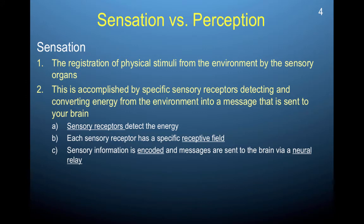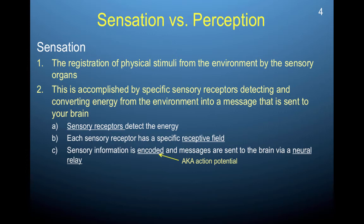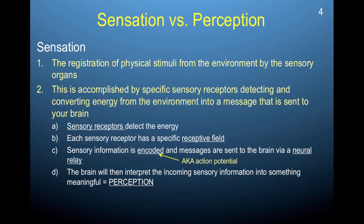The sensory information is encoded by neurons and sent to the brain via a neural relay. This encoding is basically an action potential: when a sensory receptor receives energy that falls into its receptive field, that causes an action potential, which is the act of encoding that energy from the environment for the brain to begin to process it. The brain will then interpret the incoming sensory information into something meaningful — this is perception.